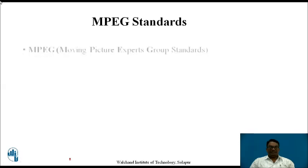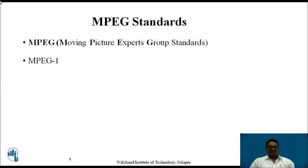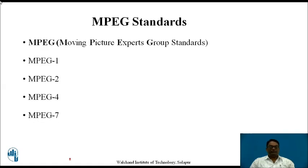The different MPEG standards are MPEG 1, MPEG 2, MPEG 4, and MPEG 7. MPEG 1 generally deals with audio-type information. MPEG 2 deals with enhanced audio and video standards. MPEG 4 deals with both audio and video where synchronization is maintained. MPEG 7 deals with developed versions of digital audio and video, which we are now using, known as HD transmission and reception.